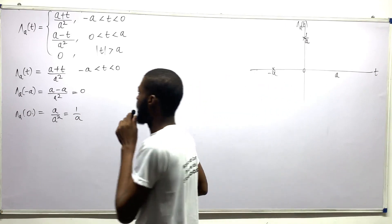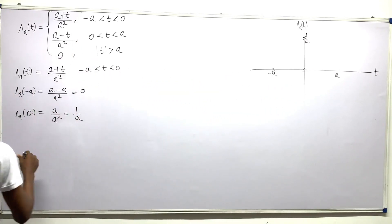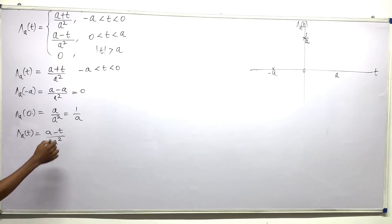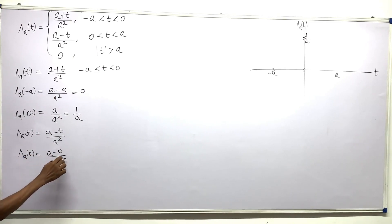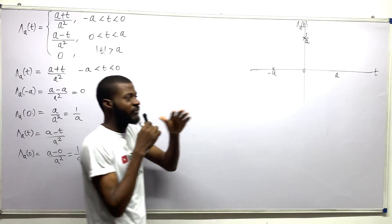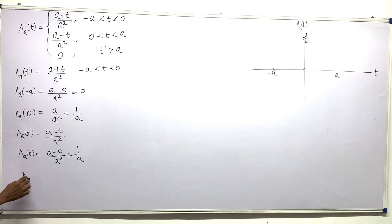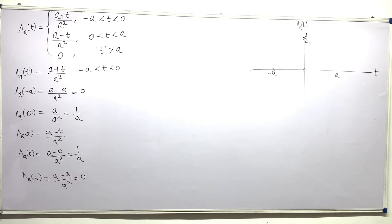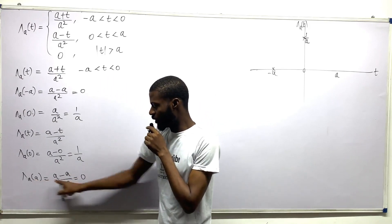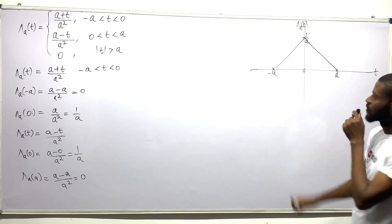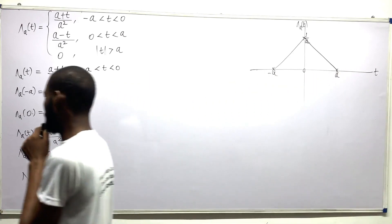The next piece of the triangular function is (a − t) divided by a squared. Inputting zero: (a − 0)/a squared = 1/a, so this value repeats itself on the other side. Putting in a: (a − a)/a squared = 0. So when it's at a, the value is zero. Joining these together gives us the triangular graph. Now I can start looking for the Fourier transform.